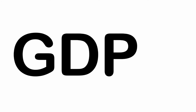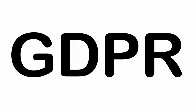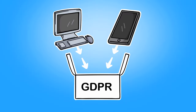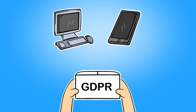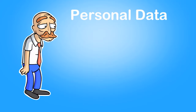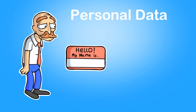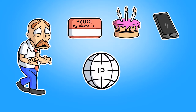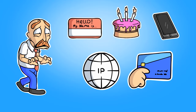The General Data Protection Regulation is a set of laws that regulate how personal data can be collected, stored and used. Personal data is any information that can be used to identify the person whom it belongs to. This includes names, birthdays and phone numbers, but can also be data like IP addresses and payment card details.